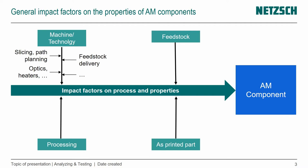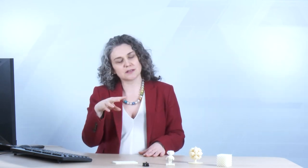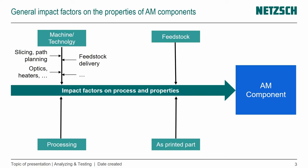When you think of the machine, I've put a couple of examples here. For example the slicing — how that is done, how thin the layers are, the path planning — how fast do we come back to the same location or next to that location, or are we actually going in circles? That has an impact on the temperature field, for example, and is important for the properties.